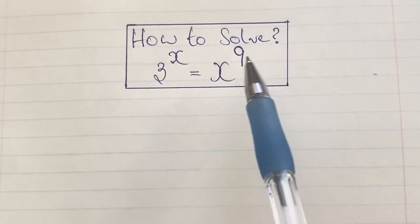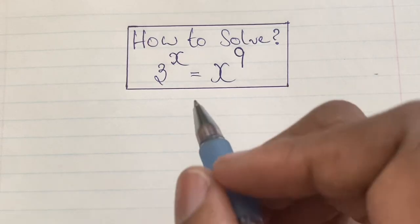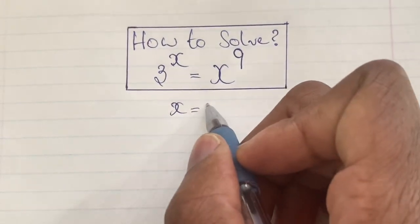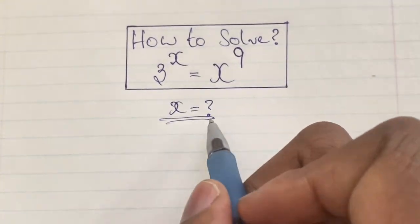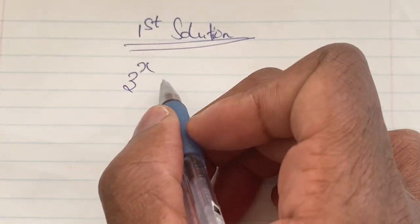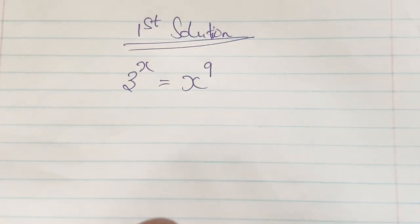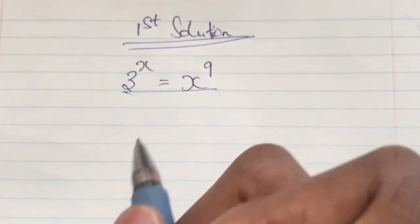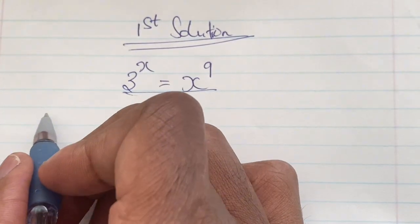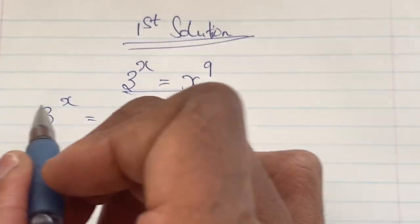Greetings again everyone, welcome back to my channel. We're going to solve another algebraic exponential equation. In this equation we have 3 to the power of x is equal to x to the power of 9, and we're going to find the value of x. We're going to use two solutions to find the value of x, and each solution is going to give us two possible solutions. You can check out my other math olympiad videos or Lambert W function videos for similar problems.